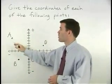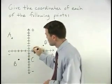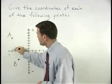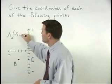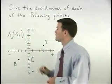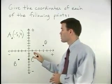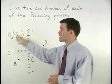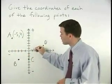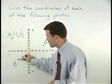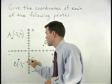To find the coordinates for point A, we start at the origin and we move 5 units to the left and 4 units up. So that's the point negative 5, 4. Remember when finding the coordinates of a given point, we always go left or right first, then up or down. So for point B, we go to the left 3 and down 3. So that's negative 3, negative 3.